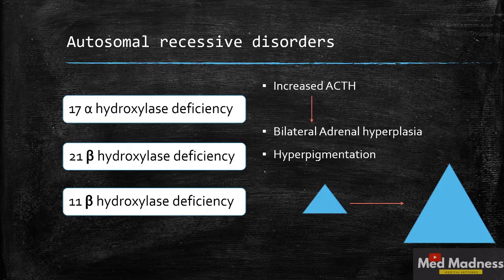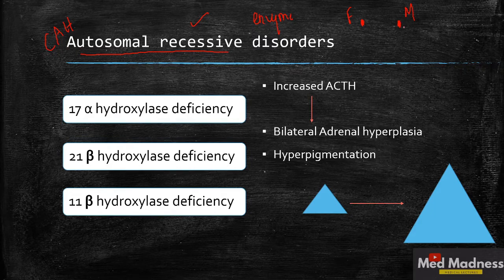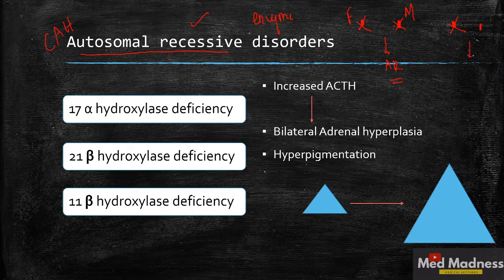Congenital adrenal hyperplasia is an autosomal recessive disorder because most enzyme disorders are autosomal recessive. If you receive a defective gene from one parent, the other gene can compensate. Only when both gene copies are defective does it result in an autosomal recessive disorder. In contrast, autosomal dominant disorders occur when any one gene is defective.